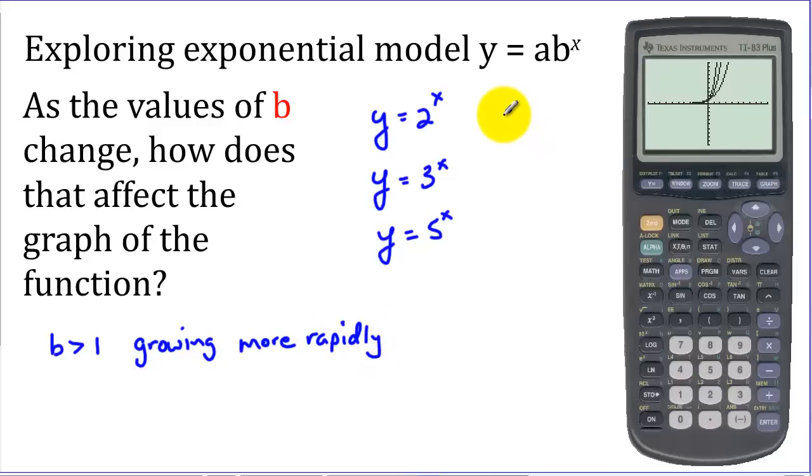Now let's look at what happens if we look at a fraction for b. So let's say what if we had y equals 1 half to the x. So let me enter our functions. Let's clear these out. And let's put in, say, 0.5 to the x.